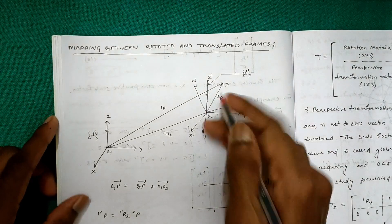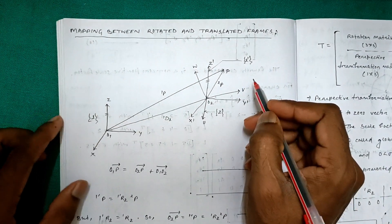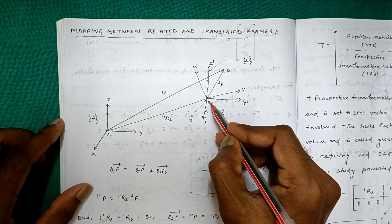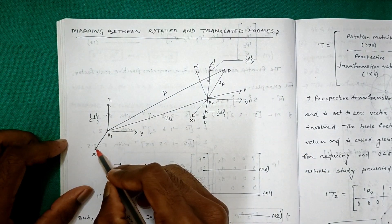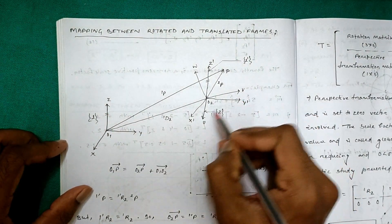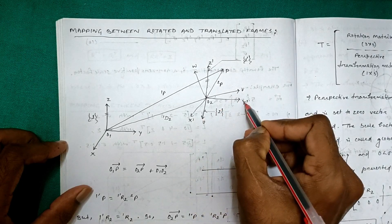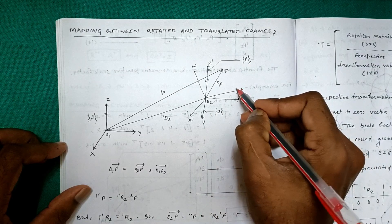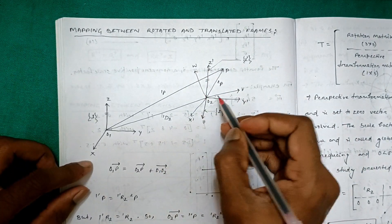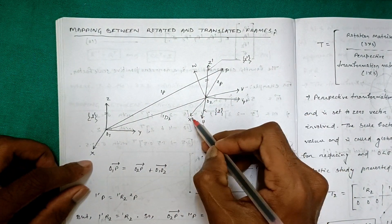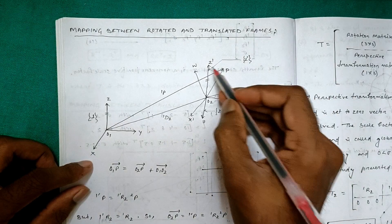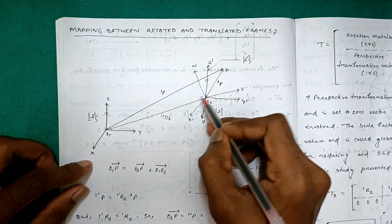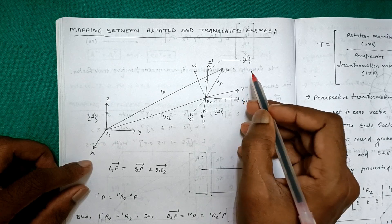Now we will see mapping between rotated and translated frames. Here O1 is the first origin and O2 is the second origin. The principal axes of frame 1 are x, y, z, and after rotation we get u, v, w. The frames x,y,z and x1,y1,z1 are parallel to each other.